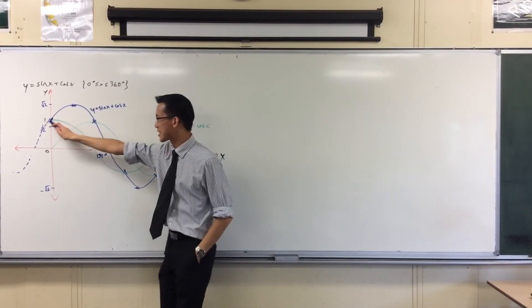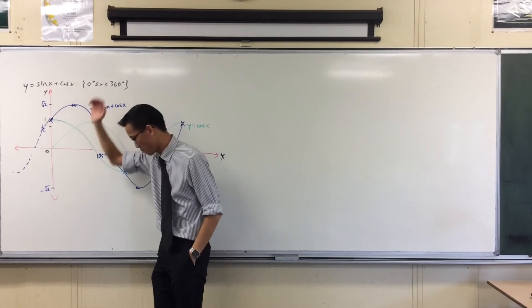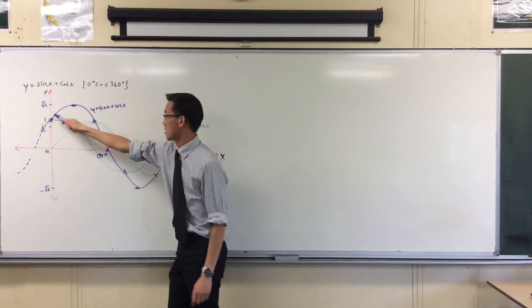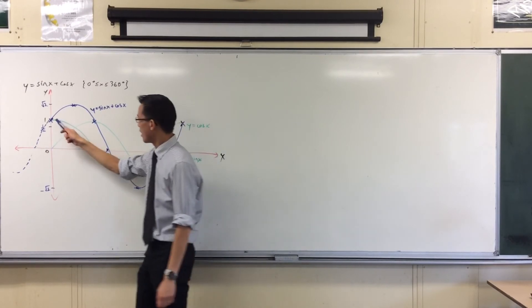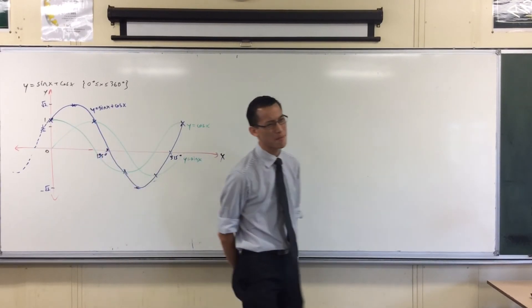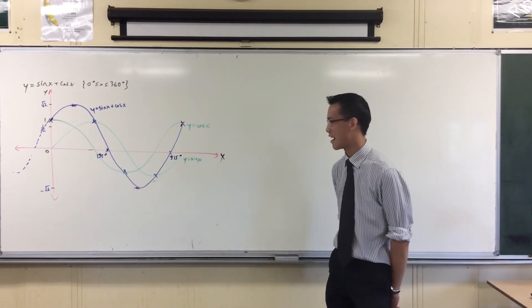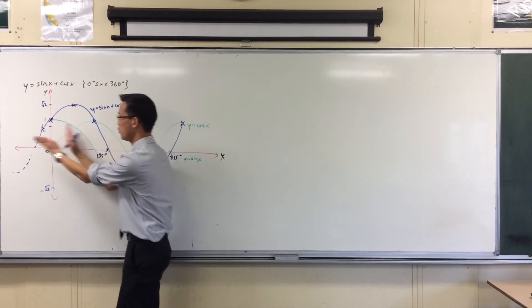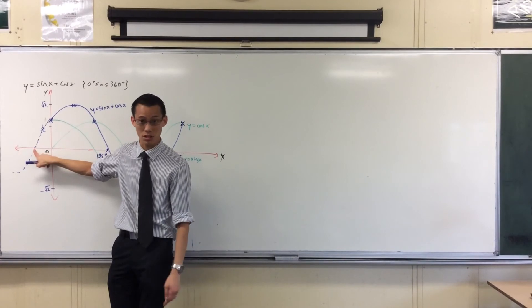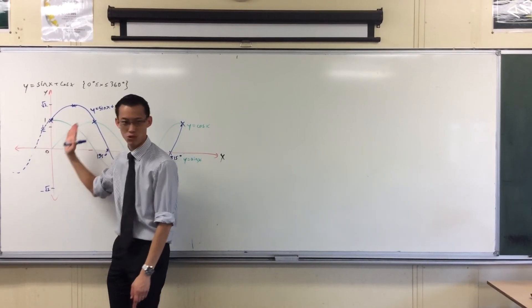It's also been sort of moved over. Because cos starts at its maximum and then comes down. Sine starts at the middle. This blue graph starts neither at the middle or at the top. It just kind of starts midway. So something's been moved over. This should really be the start, shouldn't it? But I've sort of shifted over a little.